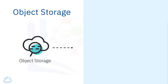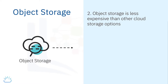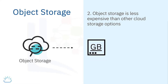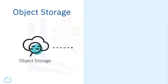The second thing to note about object storage is that it's less expensive than other cloud storage options. Its per gigabyte cost is typically a couple of US cents per month, and in some cases even less, depending on the storage tier used. More on storage tiers later.